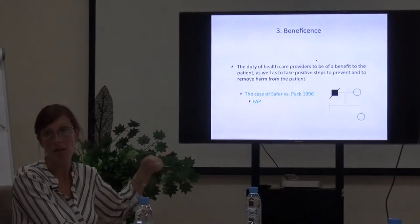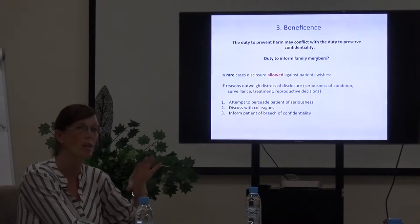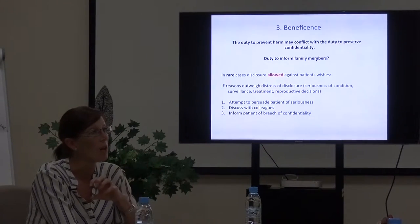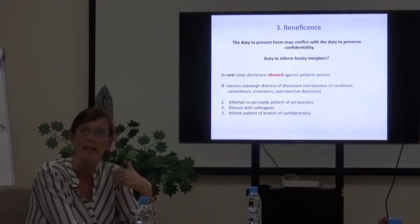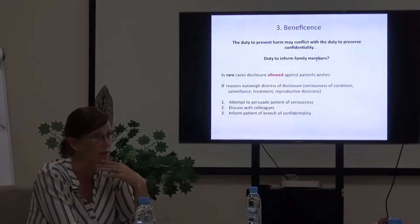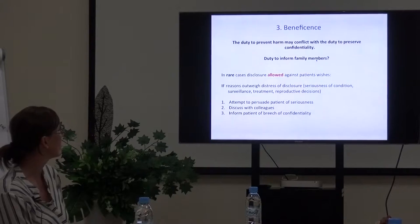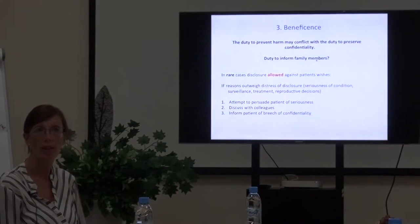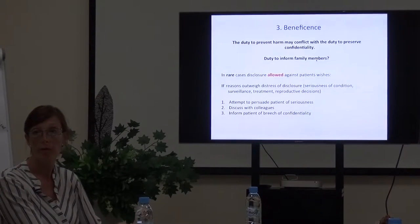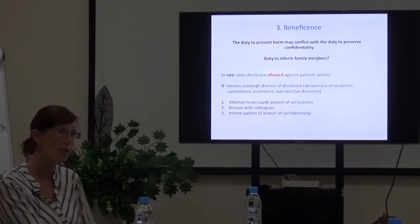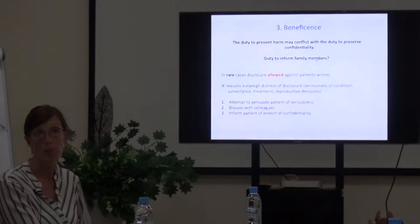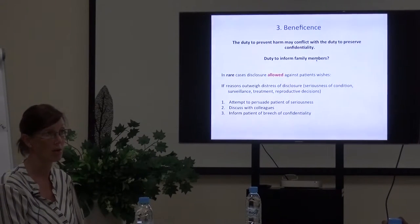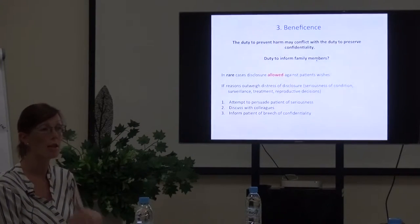Based on the court's decision, the doctor was wrong. This is where genetic information may be very different from our usual understanding of medical ethics. We're often faced with the conflict of preserving confidentiality or autonomous decision-making while still being able to inform family about a very significant risk. In genetics, one important factor is that genetic information does not only apply to the individual — it applies to the whole family. In rare cases we can disclose information against a patient's wishes.